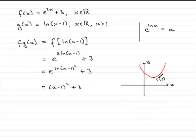So because we've got this graph drawn here and it's moved up 3 units, it looks like the range would be greater than or equal to 3 for fg of x.